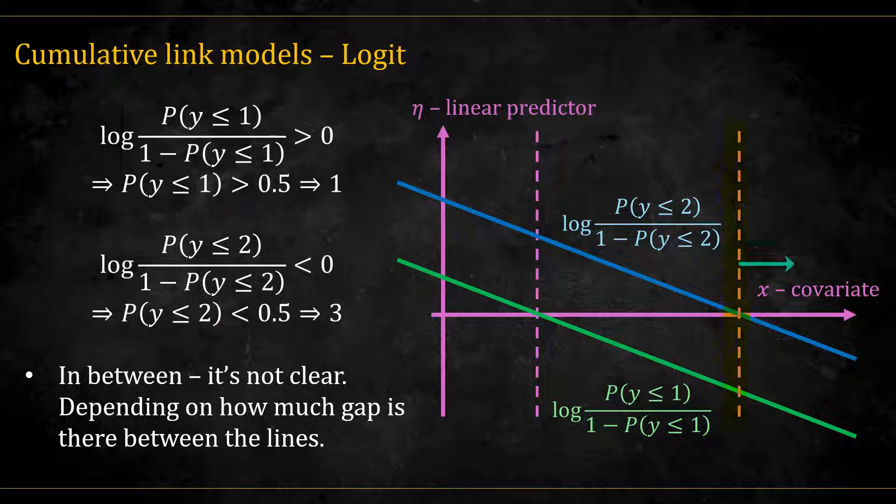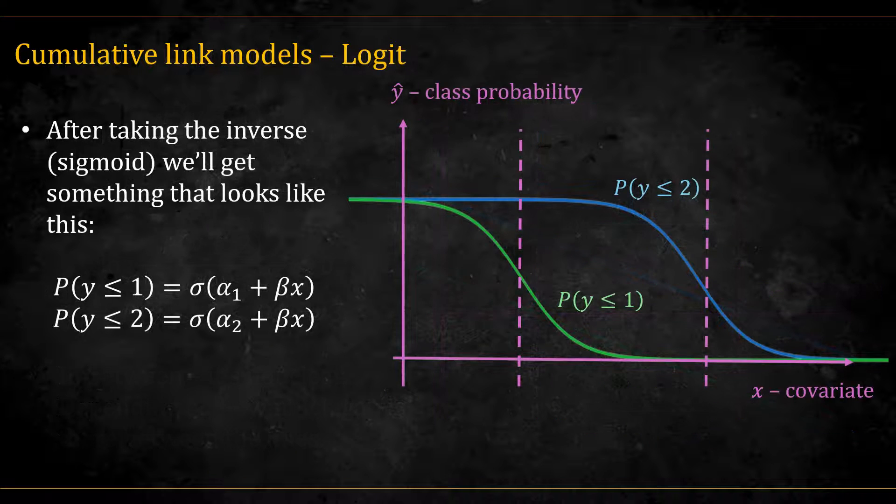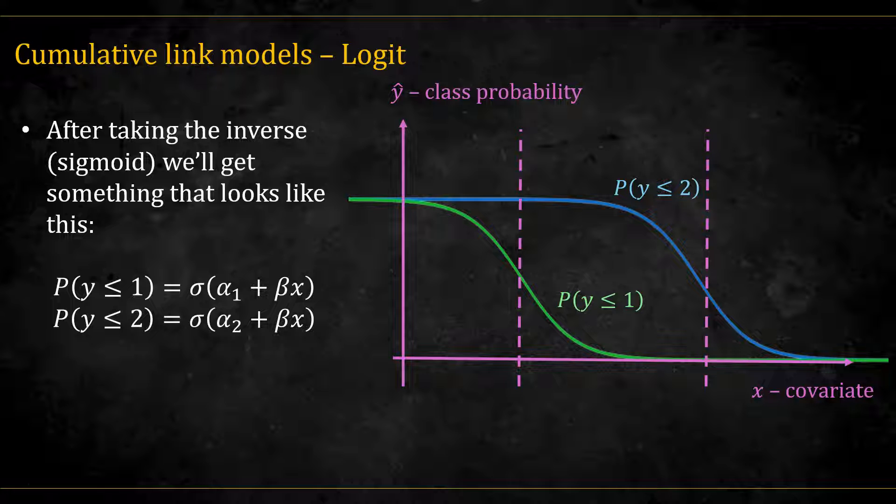When x is above this line here, we have that the second logit is below 0, and so we get that the most probable option is 3, since if the chance to be either 1 or 2 is below 0.5, the only remaining option must be above 0.5. But in between, it is not clear what is the most probable option, and it depends on how much gap there is between the lines. After taking the inverse logit, that is the sigmoid function, over the linear predictor, we get the following graphs, for the actual predicted class probabilities. We see that the crossing with the line y equals 0 is translated to y equals 0.5 here, after the sigmoid.